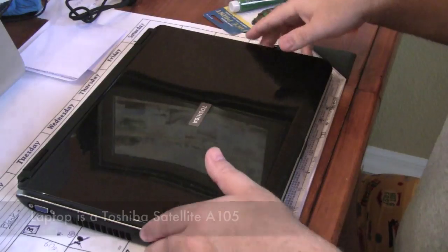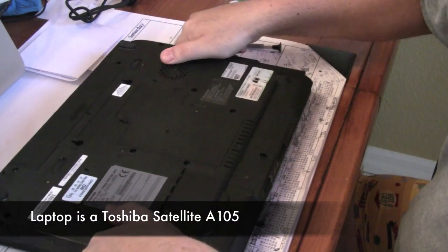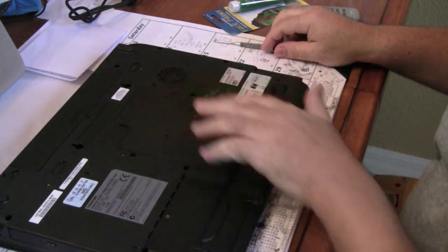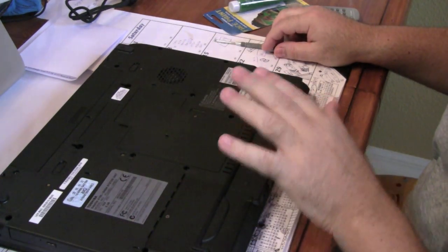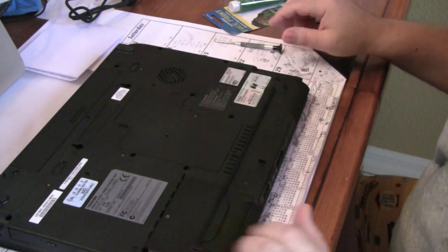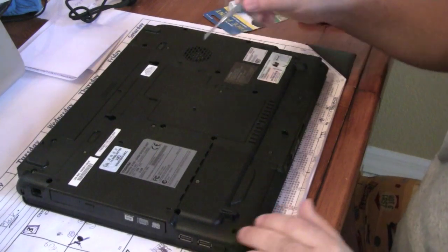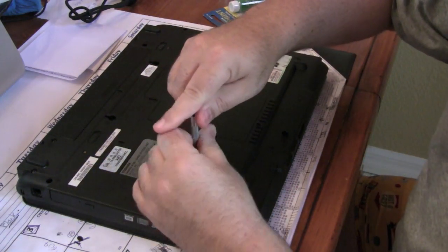So let's get started. First, you're going to turn over the laptop. Now you're going to find some areas that have something serviceable underneath. Each one's going to look slightly different, so you'll need to figure out which one's which. But in this case, it's this port right here. So we're going to open up that port.